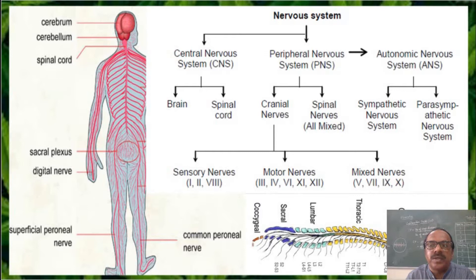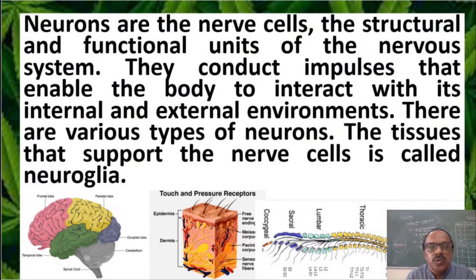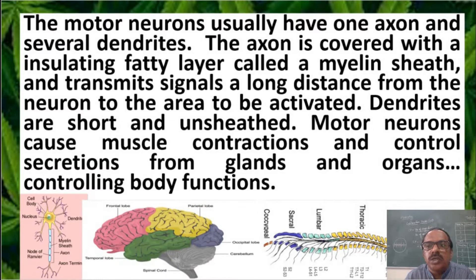The nervous system includes the central nervous system made up of brain and spinal cord, the peripheral nervous system, and the autonomic nervous system. Neurons are the nerve cells — the structural and functional units of the nervous system. They conduct impulses that enable the body to interact with both external and internal environments. The tissue that supports the nerve cell is called neuroglia. Motor neurons usually have one axon and several dendrites. The axon is covered with an insulating fatty layer called the myelin sheath and transmits signals over long distances.